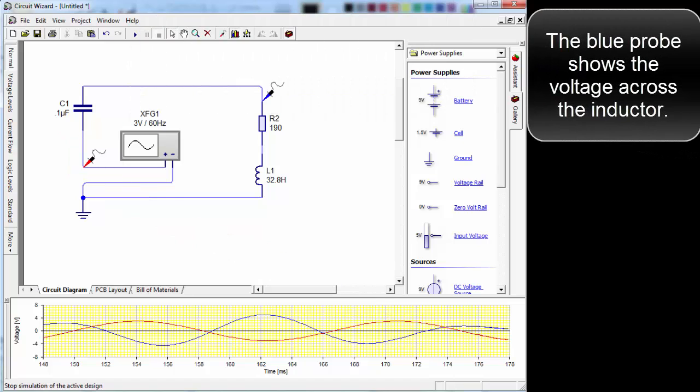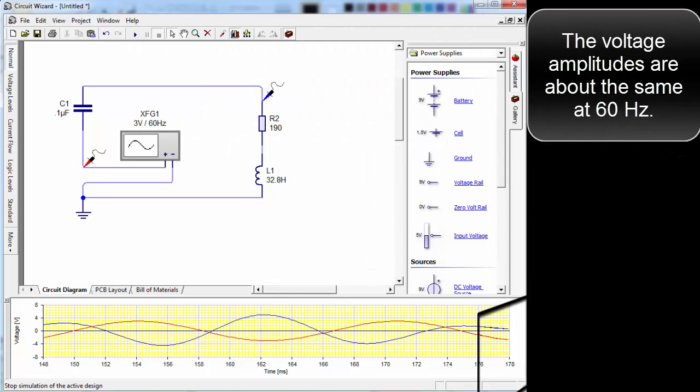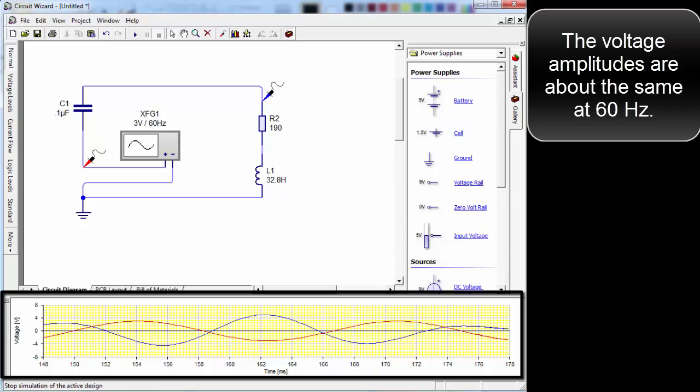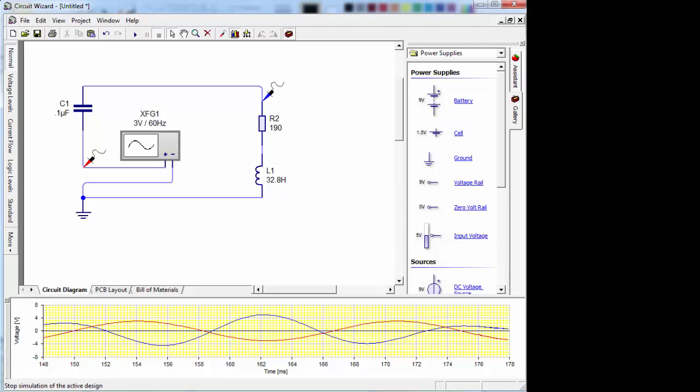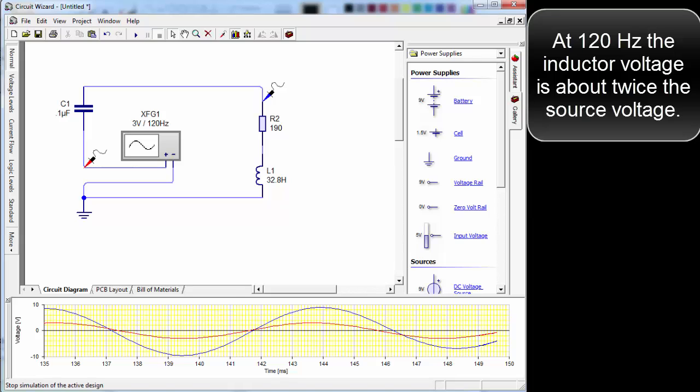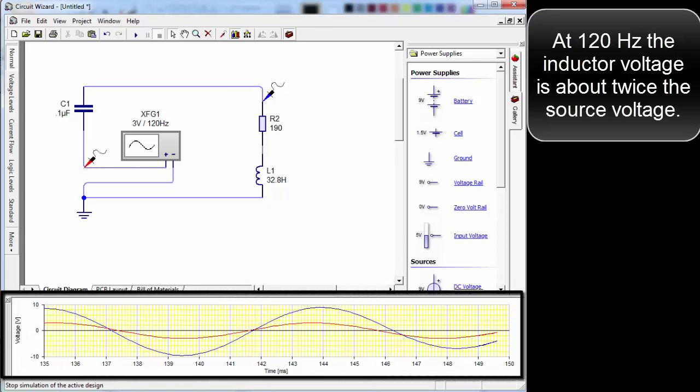The blue probe shows the voltage across the inductor. The voltage amplitudes are about the same at 60 hertz. At 120 hertz, the inductor voltage is about twice the source voltage.